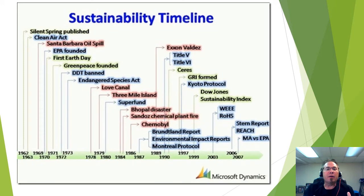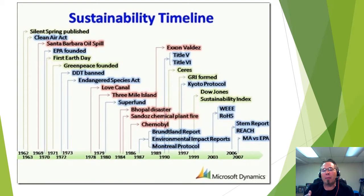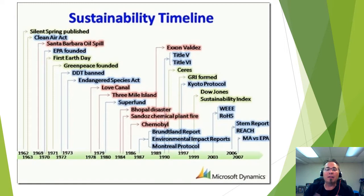Earth Day was first created around 1970, actually enacted by a Wisconsin legislator. Greenpeace was founded as an environmental action group — they have huge ships and patrol the oceans to make sure people aren't doing illegal things. DDT was banned after they realized how harmful that chemical was. The Endangered Species Act allowed animals to be protected to get their numbers back up before going extinct. Love Canal was a huge pollution incident, and Three Mile Island was a nuclear incident.